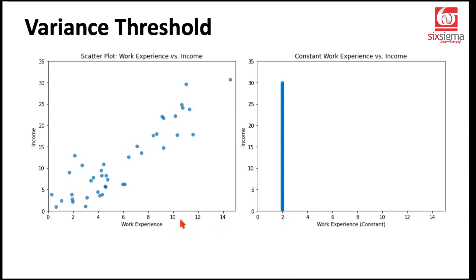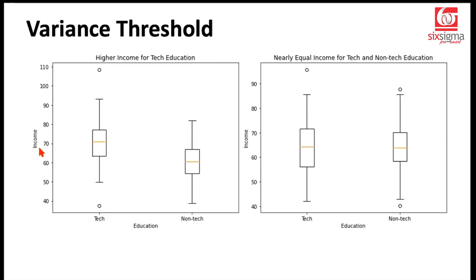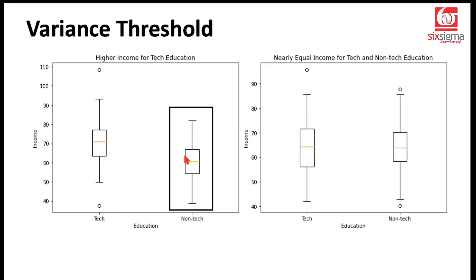Let's take another example where the independent feature is categorical and the target is numerical — we're trying to understand the difference in income depending on educational qualification. For a given company with tech and non-tech profiles, the plot on the left shows that tech profile people have a median income higher than the non-tech profile, indicating that educational background does make a difference. It suggests that technically qualified people are paid relatively better.